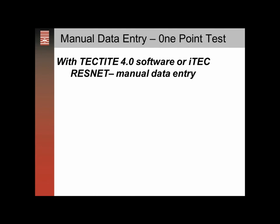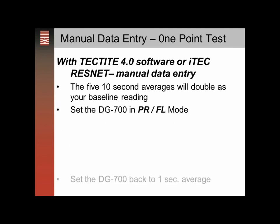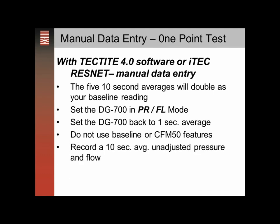For manual data entry into the software, we'll take the information a little differently. We'll take five 10-second averages, and those 10-second averages will double as our baseline reading. We don't use the baseline function of the gauge or the CFM at 50 function — we'll set the DG in pressure-flow mode. After taking the five 10-second averages, we'll set the gauge back to one second. We won't use the baseline function or CFM features of the gauge.